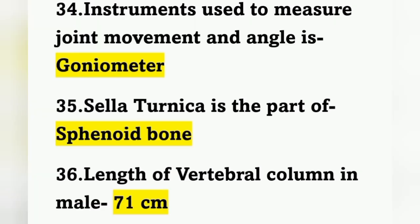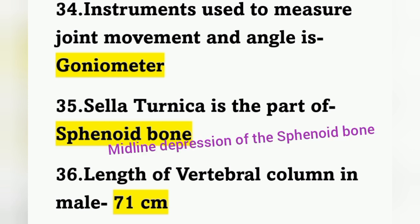The instrument used to measure joint movement and angle is called the goniometer. The sella turcica is the part of the sphenoid bone — it is the midline depression seen in the sphenoid bone.